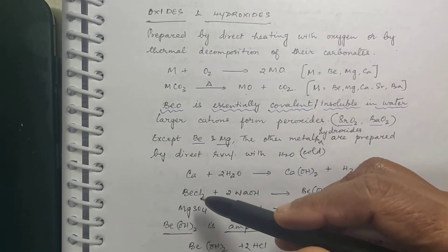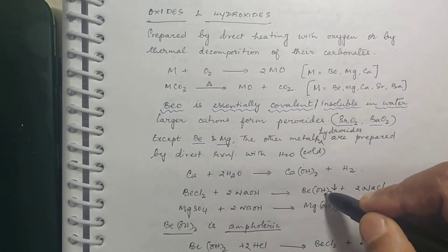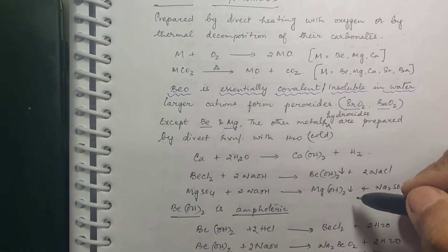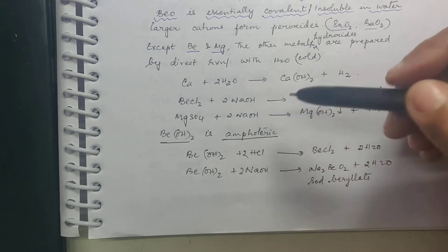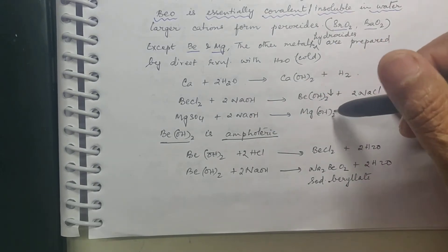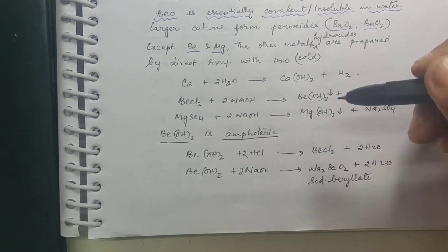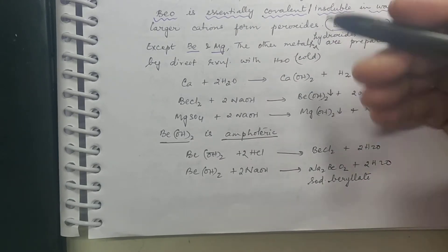If you want to prepare beryllium hydroxide or magnesium hydroxide, you take the halide of beryllium and treat it with sodium hydroxide to produce Be(OH)2. Similarly, any salt of magnesium — for example MgSO4 + NaOH — will give you magnesium hydroxide. This way you can prepare the hydroxides of magnesium and beryllium.